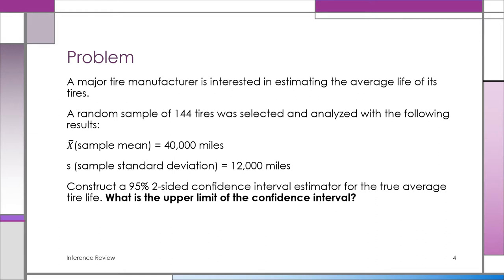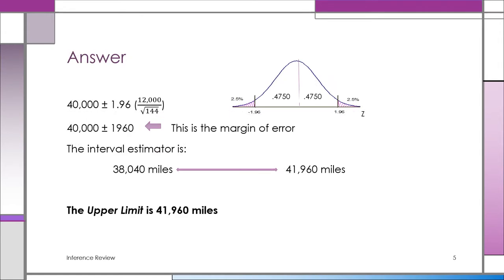The question asks: what is the upper limit of this confidence interval? Since n=144 is a large sample, we use the Z distribution. For a 95% confidence interval, there's 2.5% in each tail — 0.025. The 95% is in the center of the distribution. Looking at the Z table with an area of 0.4750 between the mean and the Z value, we find Z = 1.96.